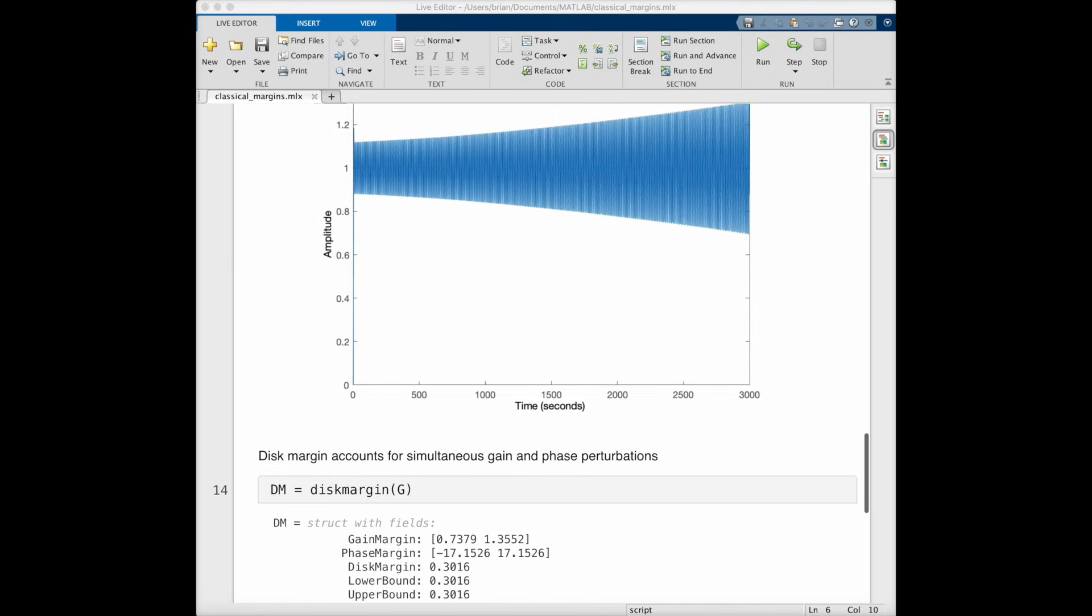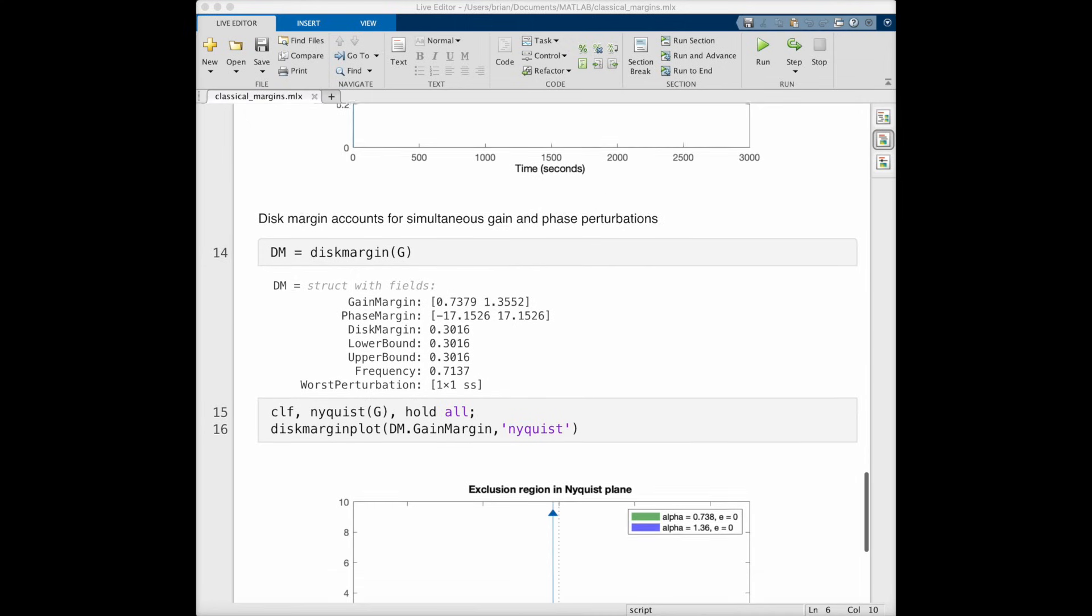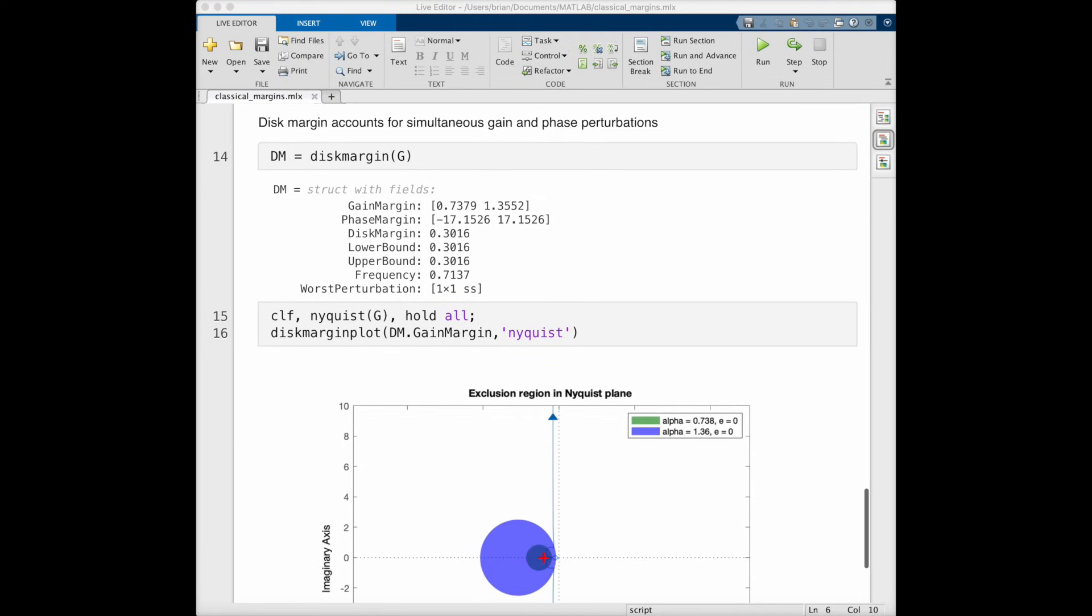Therefore, the combination of gain and phase uncertainty also needs to be considered, and not just each individually. This is why we may look at disk margin rather than classical margins, because it accounts for simultaneous gain and phase perturbations.